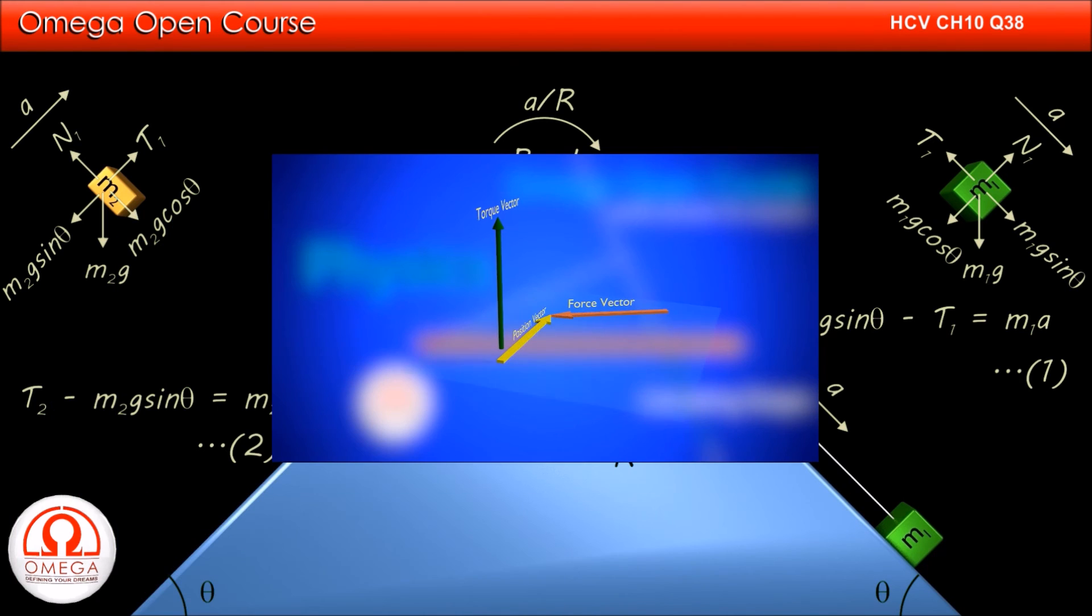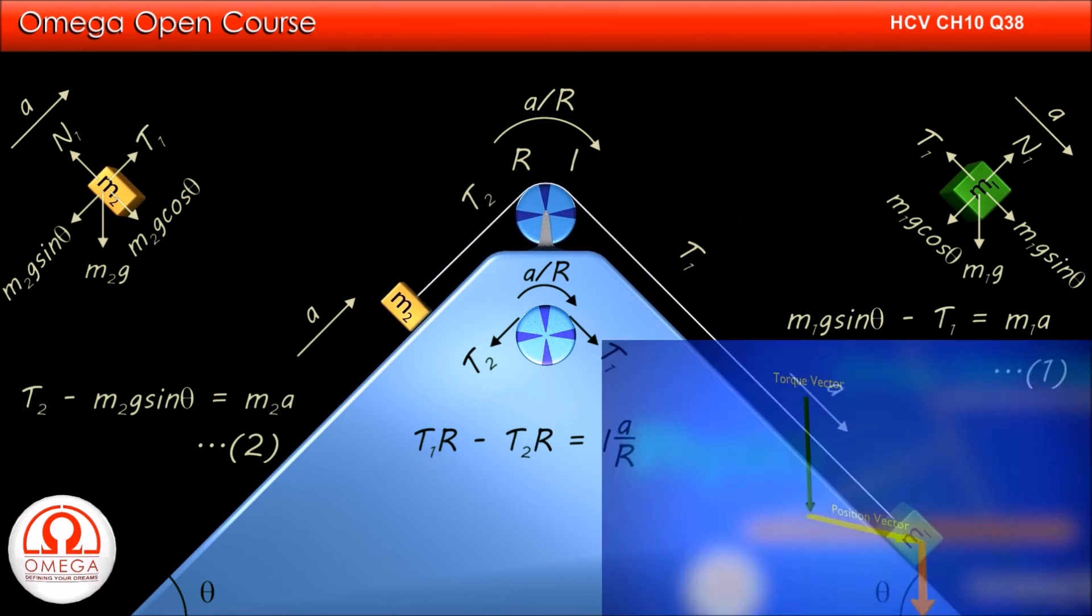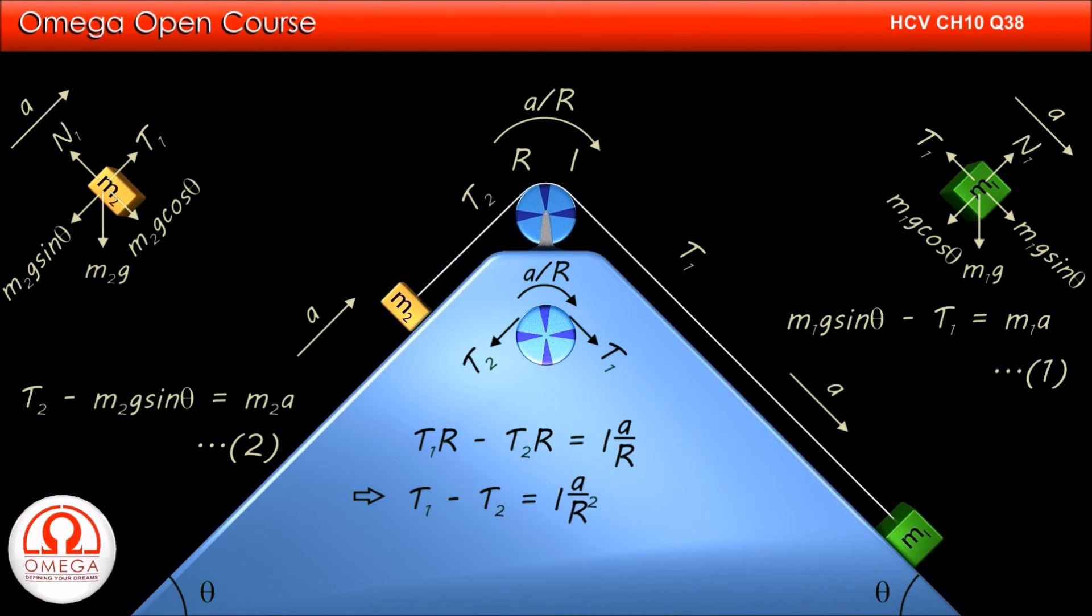If you do not know how to calculate torque, you may watch our video on calculation of torque. The link for the video is shown on the screen and given in the description below. Simplifying the equation, we get T1 minus T2 is equal to I into A by R square.